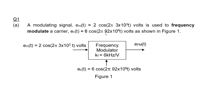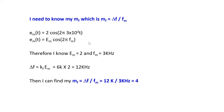Good evening guys. Someone asked how to find the bandwidth using a Bessel function table. So this is the question. Before I start anything, I need to find my modulation index mf, which is equals to the deviation frequency divided by the frequency of the modulating signal. I need to find these two parameters before I can find my modulation index.